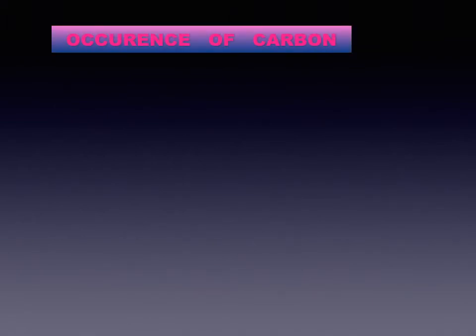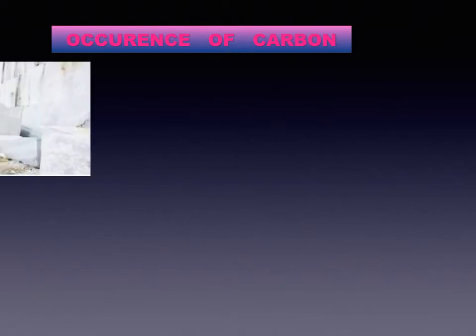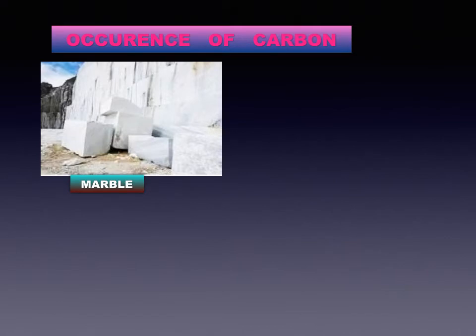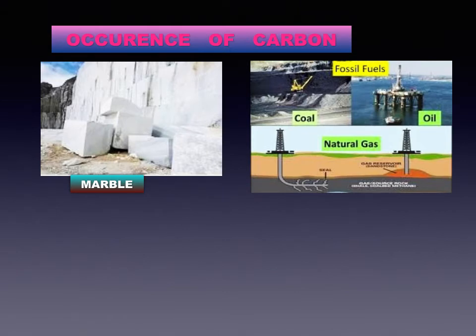Next we shall study about the occurrence of carbon. The name carbon is derived from the Latin word carbo meaning coal. Carbon is found in nature in free as well as compound state. Carbon in the free state is found as diamond and graphite, and in the combined state in the following compounds: as carbon dioxide, in the form of carbonates such as calcium carbonate, marble, calamine (that is zinc carbonate), and second, fossil fuels that is in the form of coal, petroleum, and natural gas.